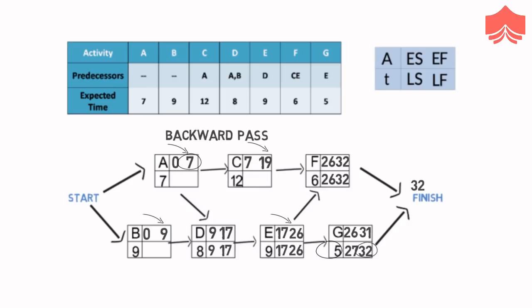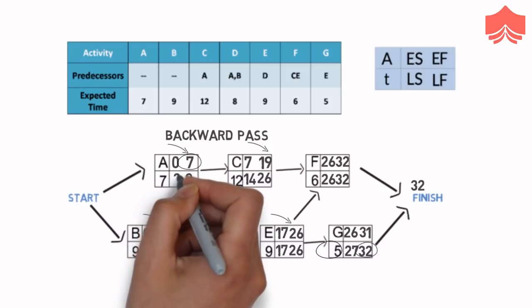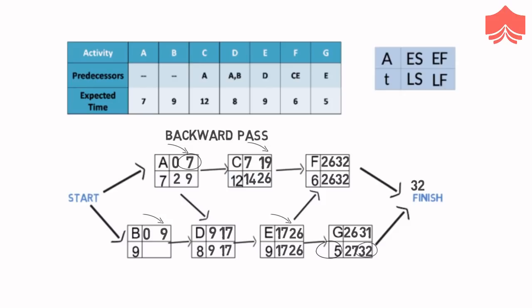Similarly, C has only F as its successor. Therefore, the latest finish time for C is 26, and the latest start time would be 26 minus 12 equals 14. Now A has C and D as its successors, and the minimum of their latest start is 9. Therefore A's latest finish will also be 9, and its latest start will be 9 minus 7 equals 2. Similarly, B has D as its successor with the latest start of 9, which becomes B's latest finish, and therefore B's latest start becomes 0. Here finishes our backward pass.